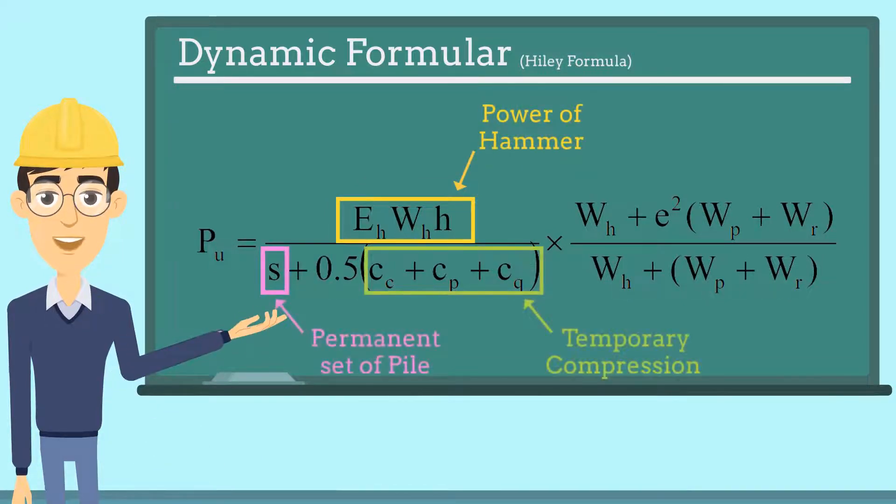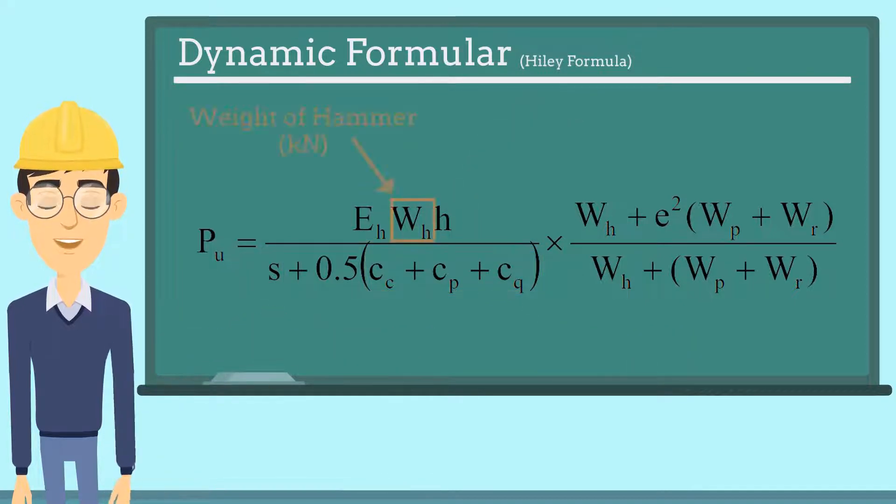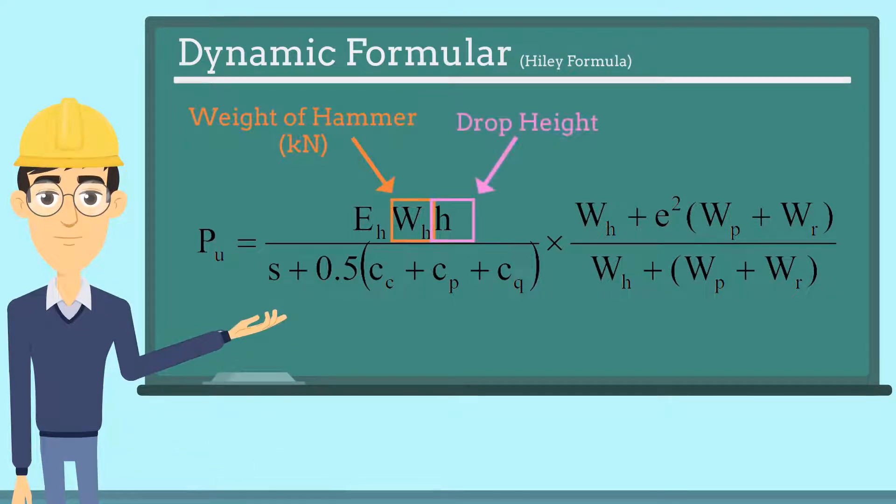and the compression of the soil. For example, Wh here is the weight of the hammer, and h here is the drop height of the hammer. These conditions affect the intensity of driving